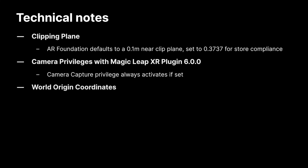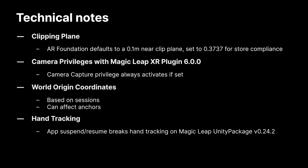World Origin Coordinates are not reset at application start, which you may be used to from other platforms. Instead, they're based on the device session — this can refer to when the device is powered on, or when head pose is lost and reinitialized. The World Origin Coordinates reset to 0,0,0 at these moments, so keep this behavior in mind. Regarding hand tracking: in this setup configuration with Magic Leap Unity package version 24.2, hand tracking will stop working when you suspend and resume the app, with the only resolution being to close the app and restart it, or to downgrade to Unity 2019.3 with Unity package 24.1 without AR Foundation support.